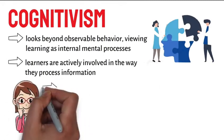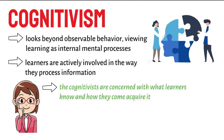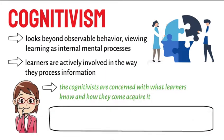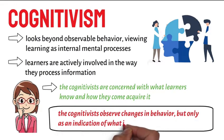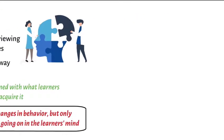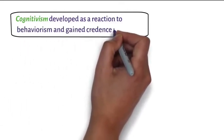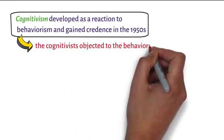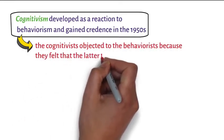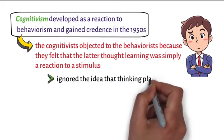The Cognitivists are concerned with what learners know and how they come to acquire it. Just like the Behaviourists, the Cognitivists observe changes in behavior, but only as an indication of what is going on in the learner's mind. Cognitivism developed as a reaction to Behaviourism and gained credence in the 1950s. The Cognitivists objected to the Behaviourists because they felt that the latter thought learning was simply a reaction to a stimulus and ignored the idea that thinking plays an important role.